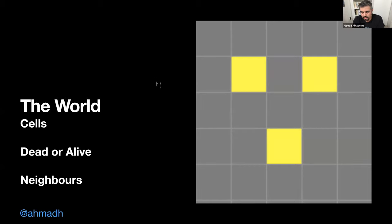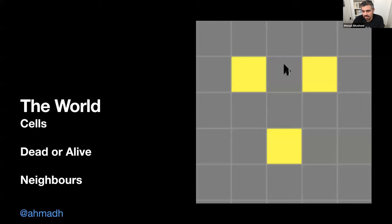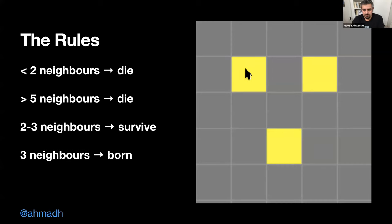There are rules that tell you what happens to a cell during each iteration — you start and move to the next frame one at a time. Each cell has eight cells immediately around it: left, right, top, bottom, and corners — those are called the cell's neighbors. The rules are simple: if you're a live cell with fewer than two live neighbors, you die, because you're alone.